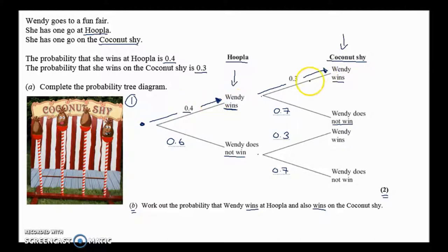then we win at the coconut shy. That's the only way to win and then win, this path here. So we need the two probabilities on the branches. And when you're travelling through the diagram, tree diagrams, you need to multiply them together.